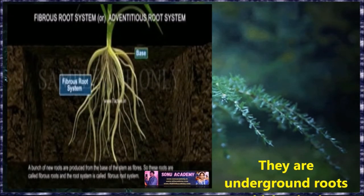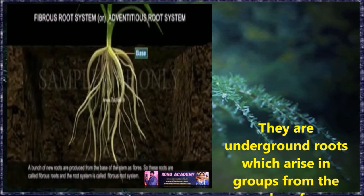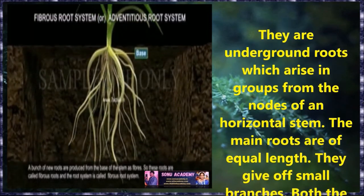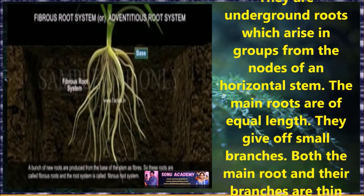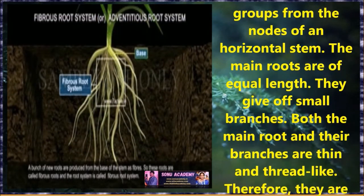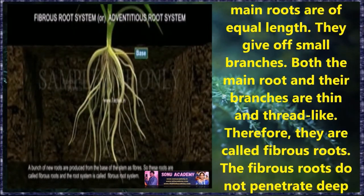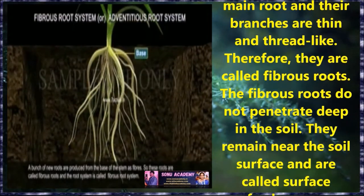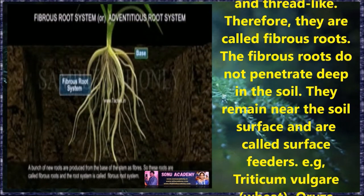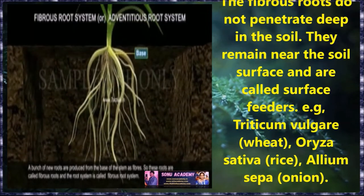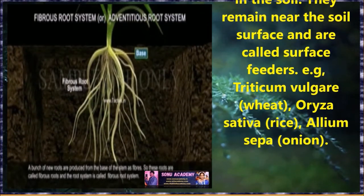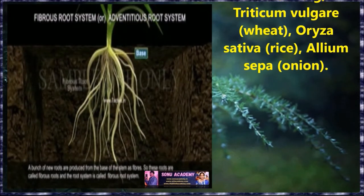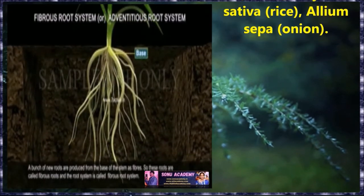Now let us discuss about fibrous roots. These are underground roots which arise in a group from the nodes of a horizontal stem. The main roots are of equal length and give off small branches. Both the main roots and their branches are thin and thread-like structures; therefore, they are called fibrous roots. The fibrous roots do not penetrate deep into the soil — they remain near the soil surface and are called surface feeders. Examples: wheat, rice, onion, etc.